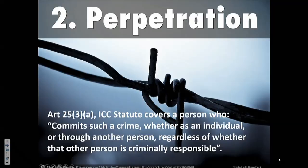The classic national law textbook example of committing a crime through another person who is not criminally responsible might be pouring a glass of poison wine at a dinner party and giving it to one guest to give to another. You know you are attempting to murder the second guest but the first guest who passes the drink does not — the crime has been committed through them and they are not criminally responsible. Other crimes might be committed through people who cannot be held criminally responsible, for example because they are children, as in the case of child soldiers. So there might be multiple ways of describing the one crime and not simply perpetration.